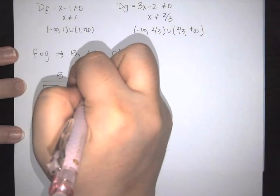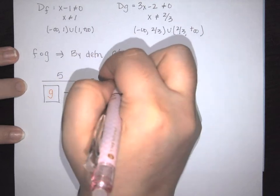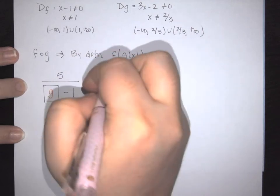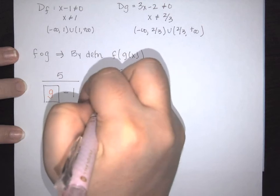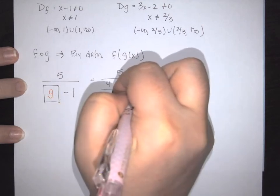So here what's going to happen is that this is going to be 5 over, and it's going to be 4 over the 3x minus 2, and this whole thing is minus 1.